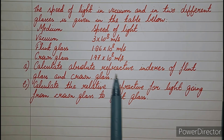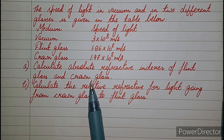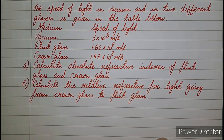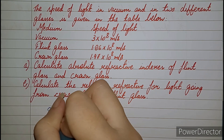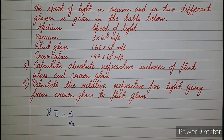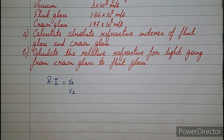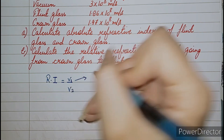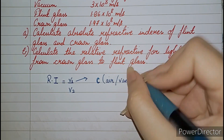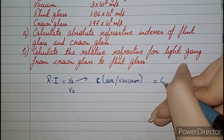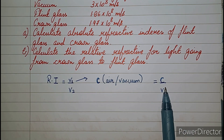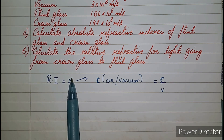Before starting, you must know the meaning of absolute refractive index. The refractive index formula is speed of light in medium 1 upon speed of light in medium 2 — this is called the relative refractive index. But when the first medium is C, the speed of light in vacuum, the formula becomes C upon V, and this is the formula of absolute refractive index. When we have two different mediums, the formula is V1 upon V2.